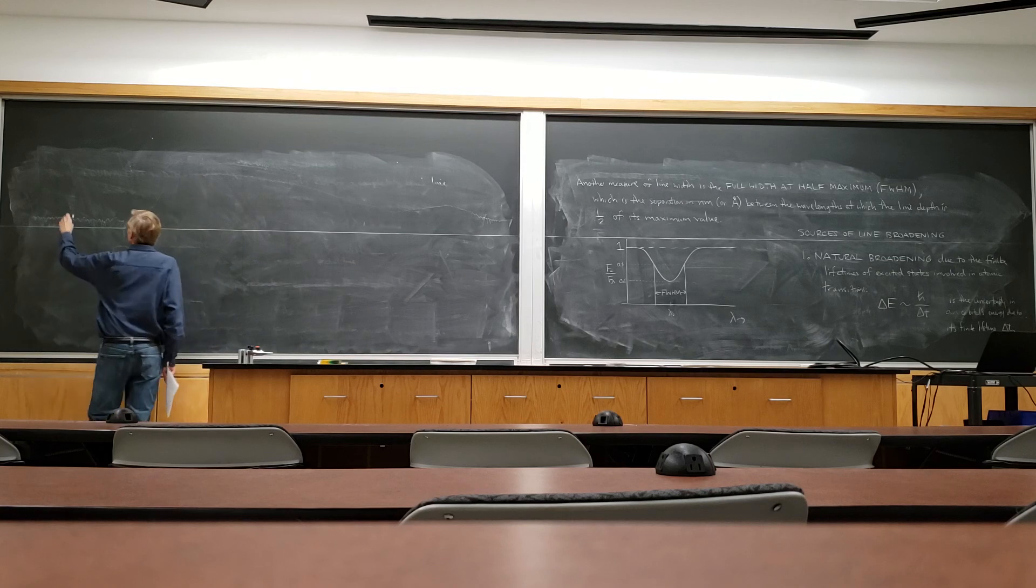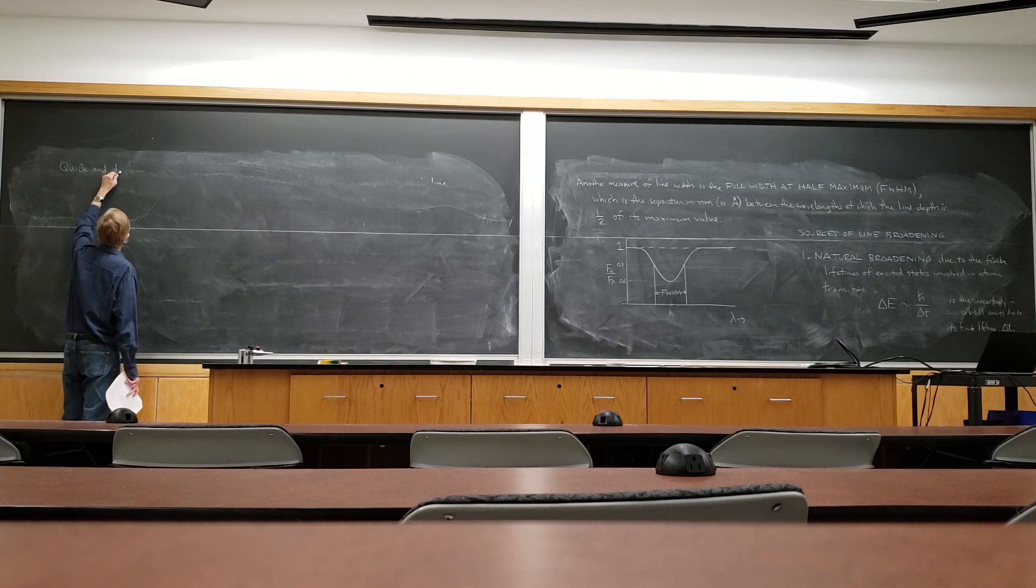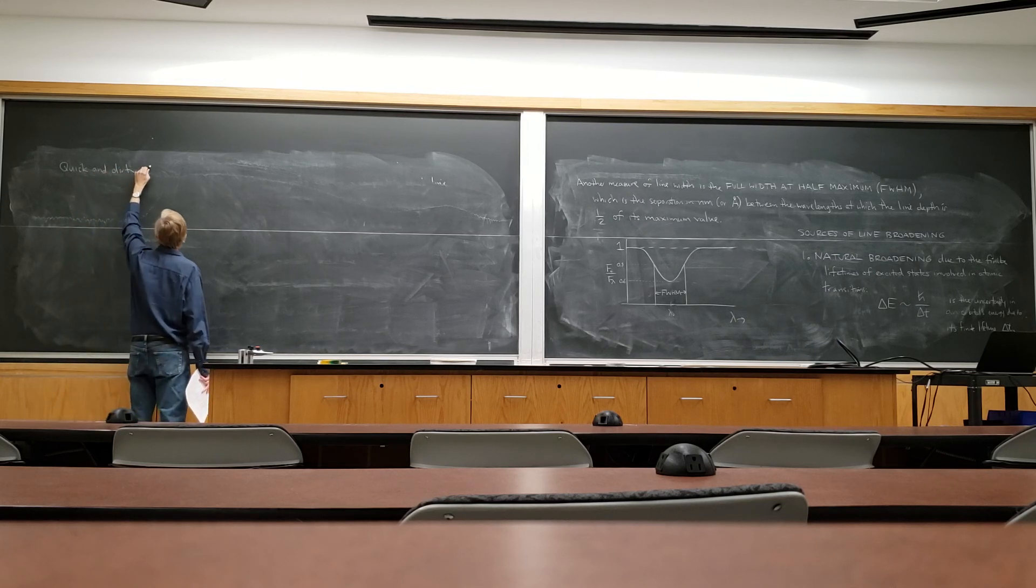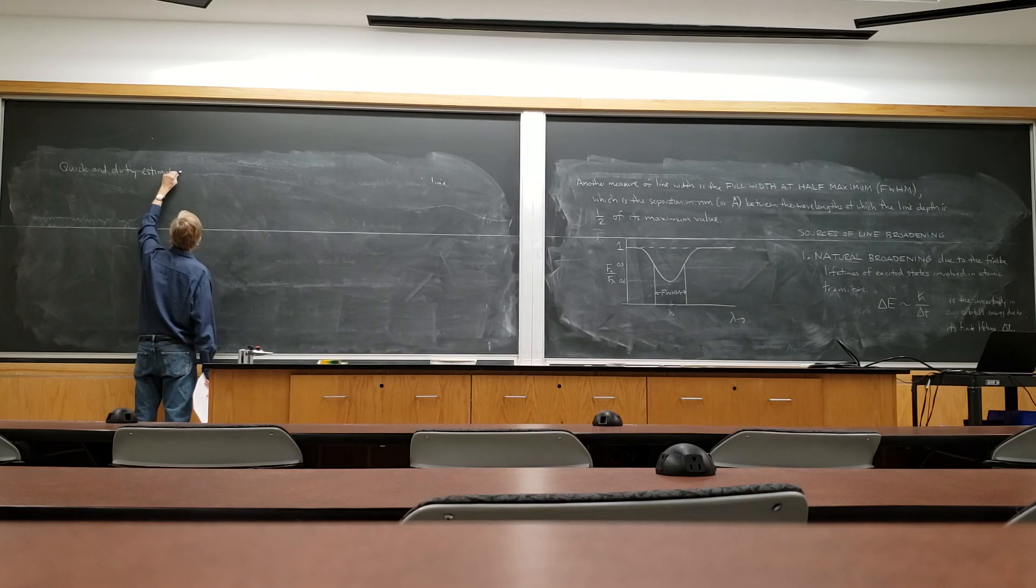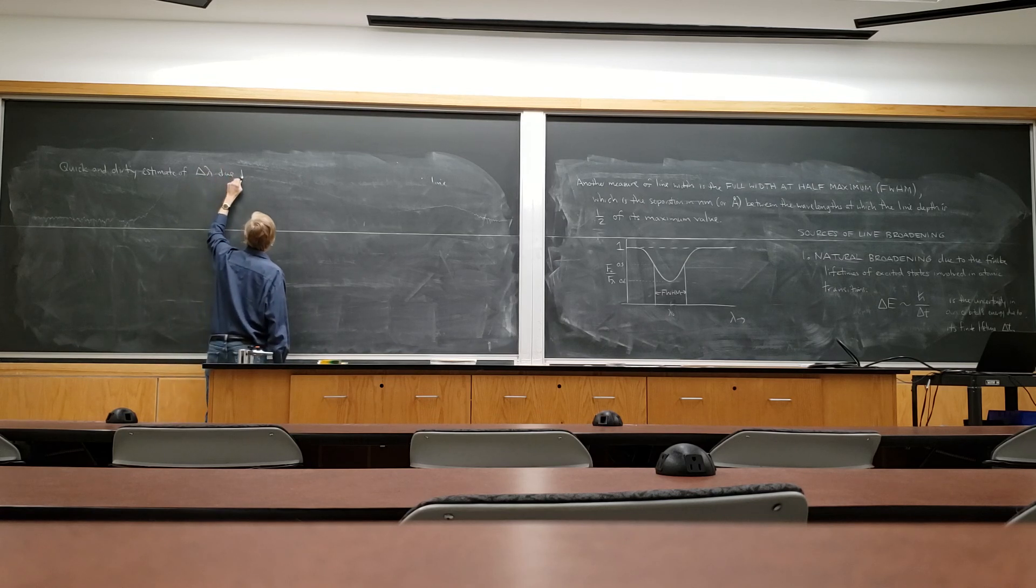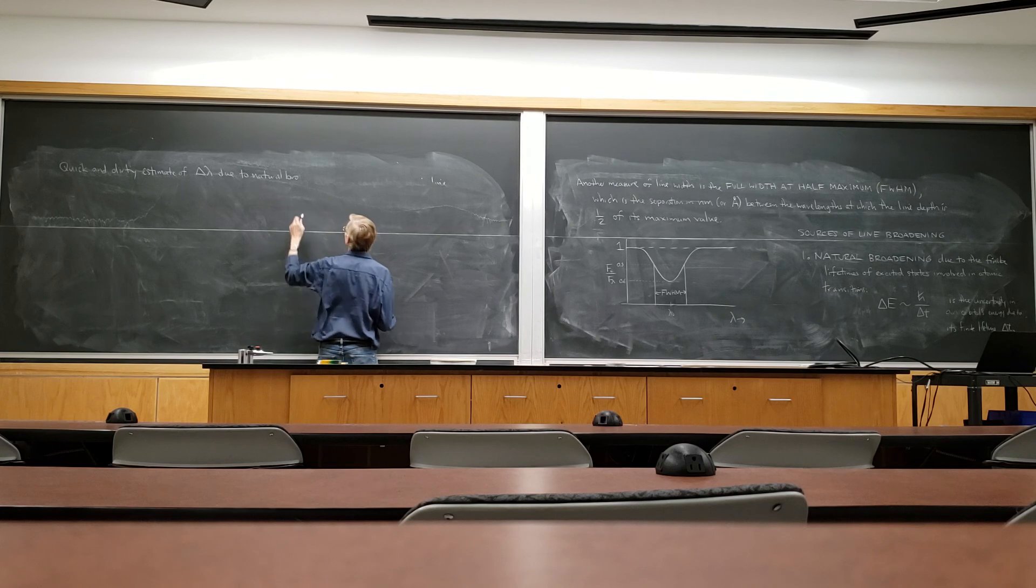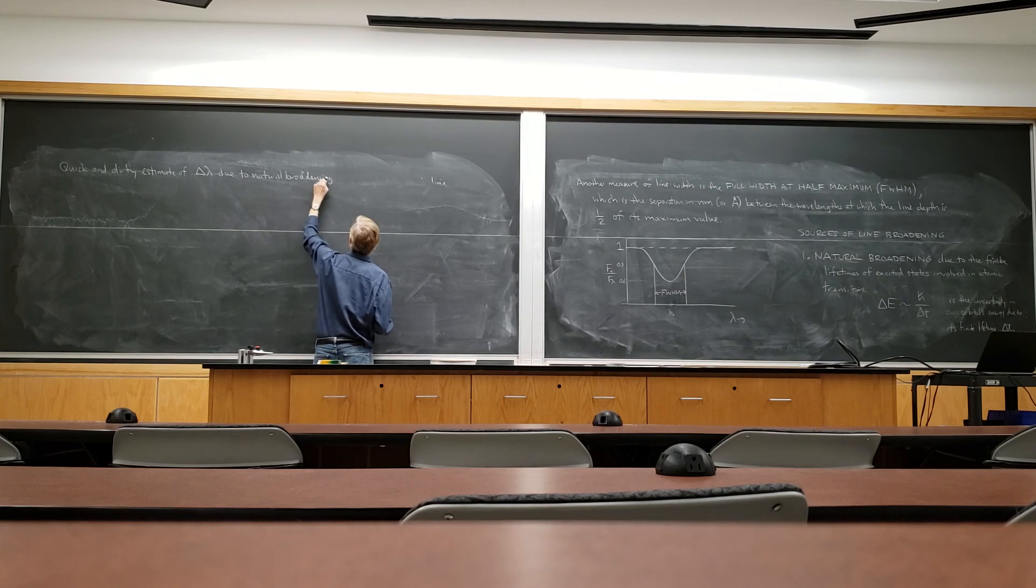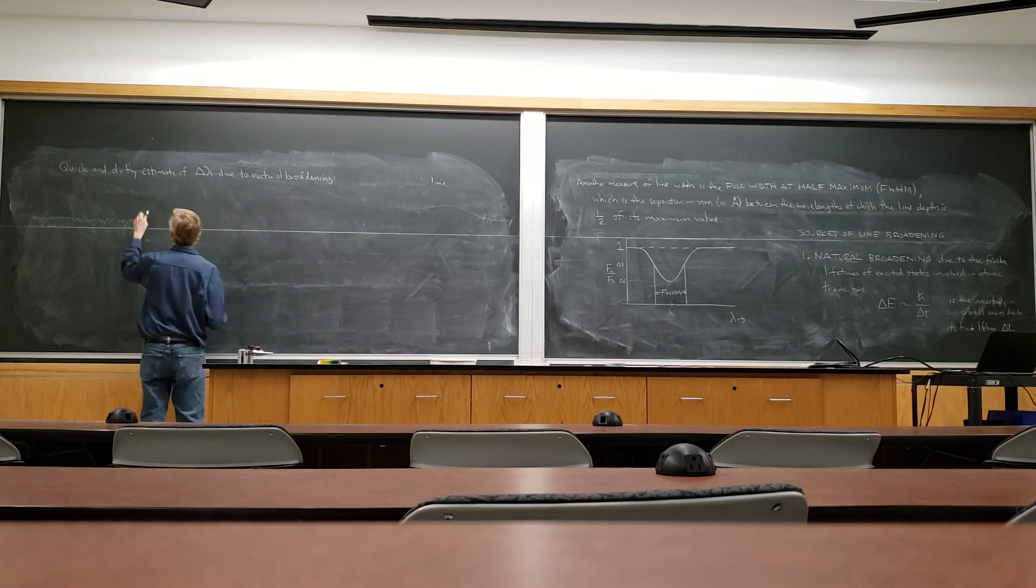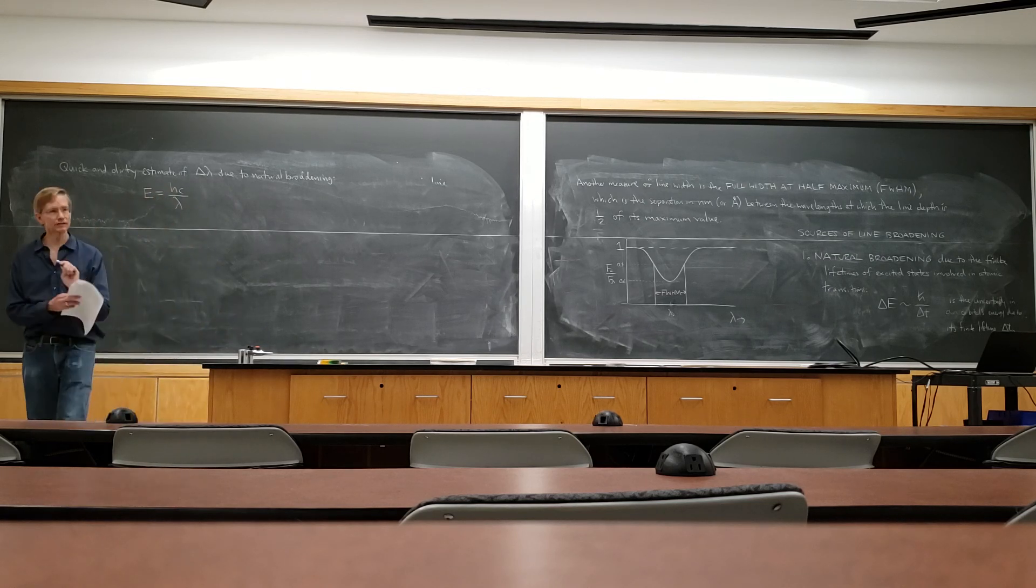Here's a quick and dirty estimate of the line width. So if delta lambda is the line width, the energy of a photon is hc over lambda.